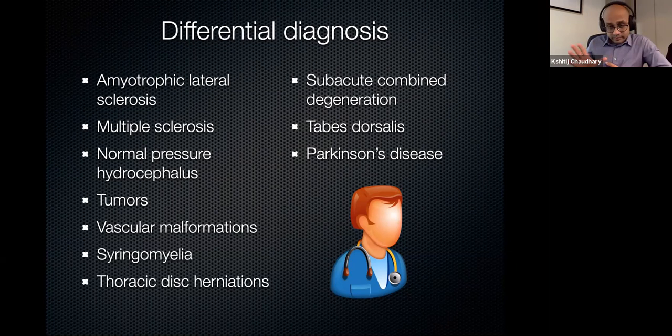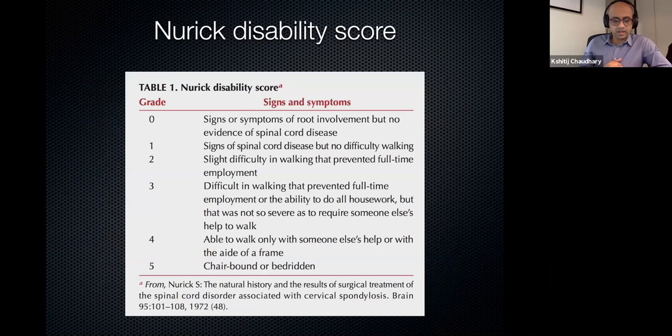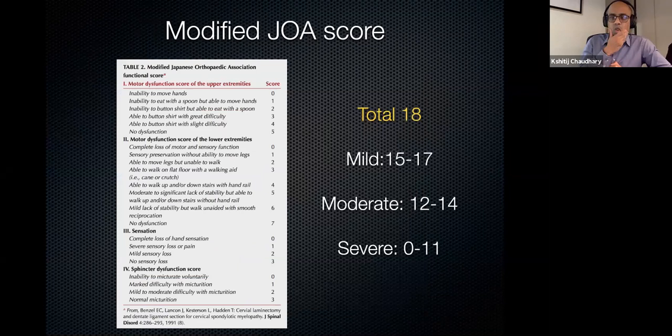The disability of these patients is quantified by the Nurick disability score, but more commonly used is the modified JOA score — the Japanese Orthopedic Association score. A score of 15 to 17 is mild, below that is moderate, and 0 to 10 is severe. This is a standard way to judge how severe the myelopathy is.